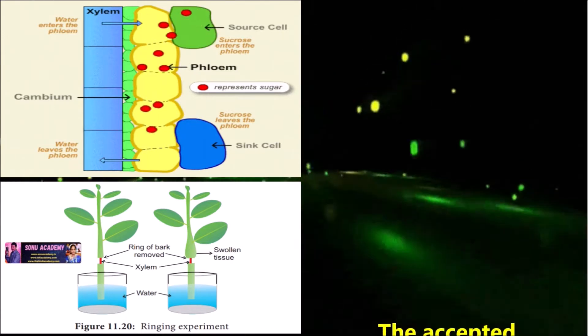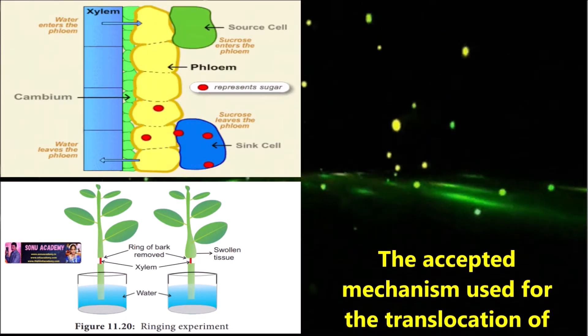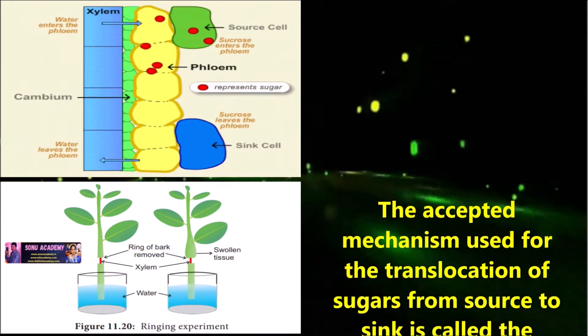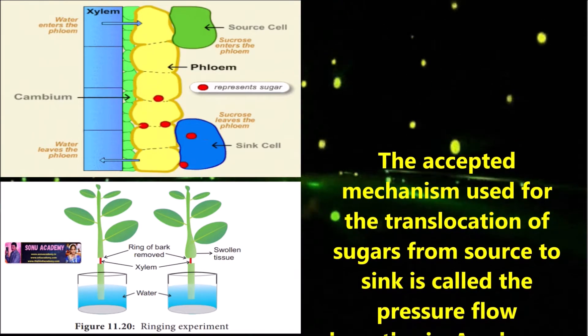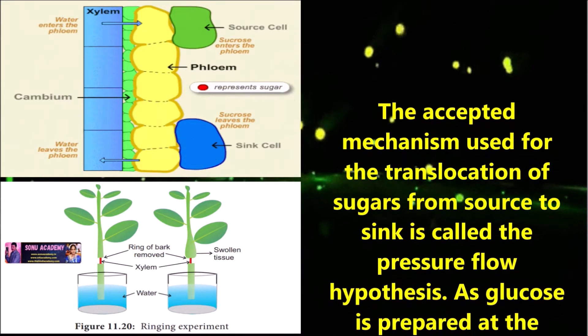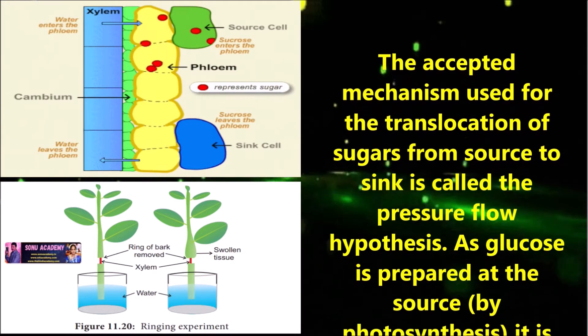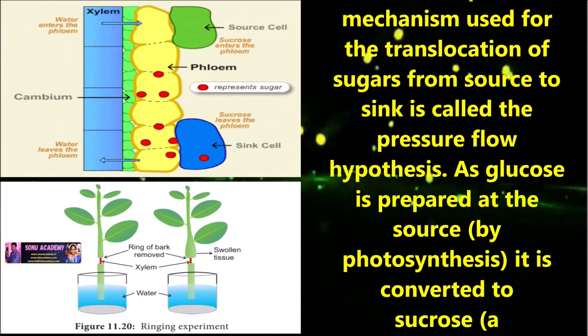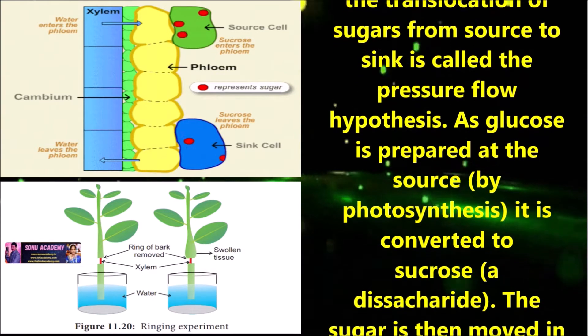Let us see the pressure flow or mass flow hypothesis. The accepted mechanism used for the translocation of sugars from source to sink is called the pressure flow hypothesis. As glucose is prepared at the source by photosynthesis, it is converted to sucrose.